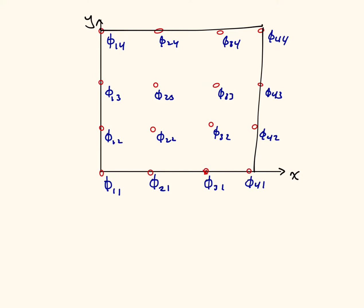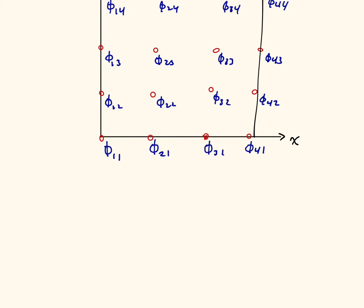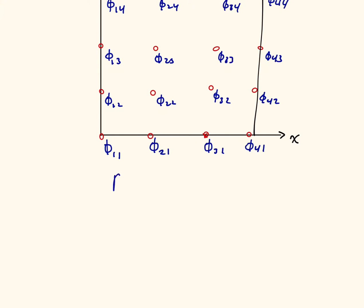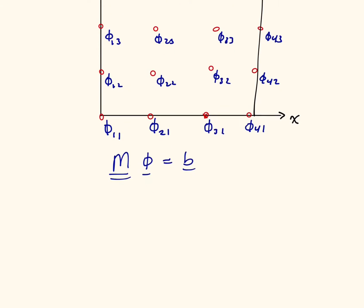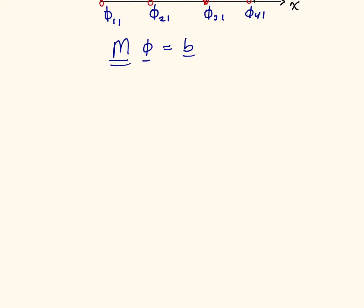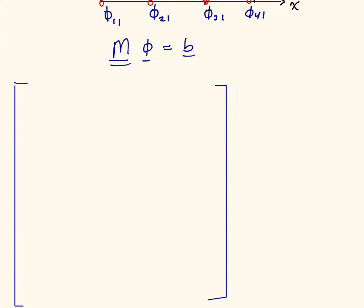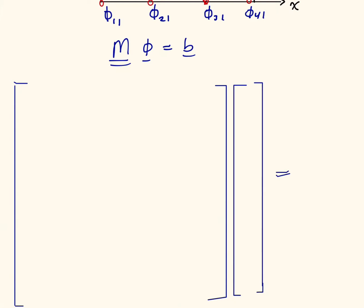The way the finite difference method works is we're going to write this as a big matrix M multiplied by all of the unknown phi's, which is equal to some other matrix B. For each of the unknown phi's, we have to write one equation in this matrix. Let's sketch out what this might look like: the M matrix is a big matrix, the phi matrix goes here, and that equals the B matrix over here.